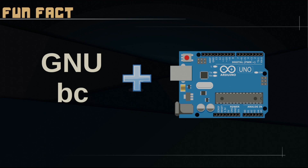Fun fact: GNU BC was actually ported to the Arduino platform, which is quite cool because Arduino is a microcontroller, but it runs GNU BC. It was super fast — I managed to calculate a factorial of 100, which was so fun. I totally recommend downloading GNU BC — the link is in the description box below.